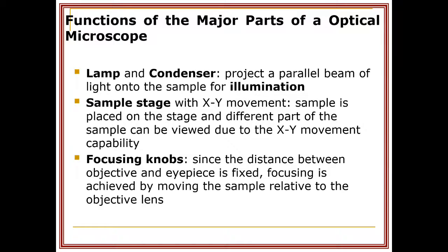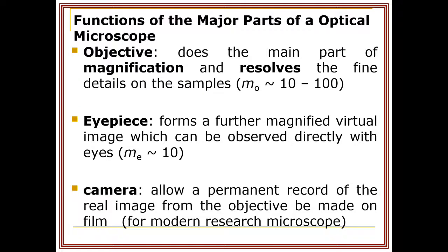The lamp and condenser project a parallel beam of light onto the sample for illumination. The sample stage has XY movement, so the sample is placed on the stage and different parts can be observed through the flexible XY movement capability. Focusing is achieved by moving the sample relative to the objective lens, since the distance between the objective and eyepiece is fixed.